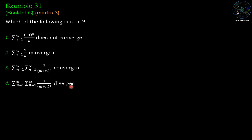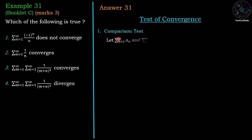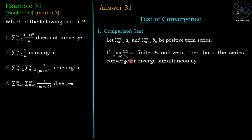It is a problem of convergence and divergence of series. First we recall important tests which we are going to use. First is the comparison test: let sigma a_n and sigma b_n be positive term series. If limit n tends to infinity of a_n / b_n is finite and non-zero, then both series converge and diverge simultaneously.